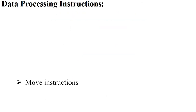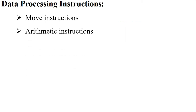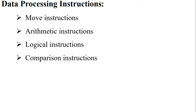In the previous class we discussed data processing instructions. Under that we discussed move instructions: MOV and MVN. MOV moves data from source to destination operand; MVN moves the negated value to the destination operand. Then we discussed arithmetic instructions: ADD, ADC (addition with carry), SUB, SBC (subtraction with borrow), RSB (reverse subtraction), RSC (reverse subtraction with carry). Then we discussed logical instructions: logical AND, logical OR, logical exclusive OR, and logical bit clear. Then we discussed comparison instructions: CMP, CMN (compare negated), TST (test), and TEQ (test equality).